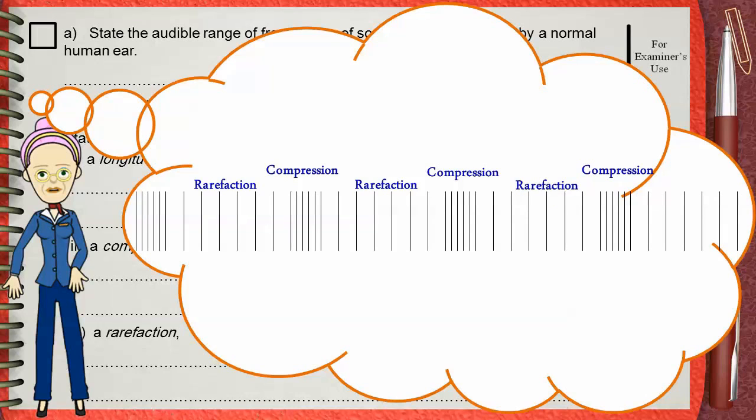The regions where lines are close to each other are compressions. And the regions where lines are far from each other, these are the rarefactions.